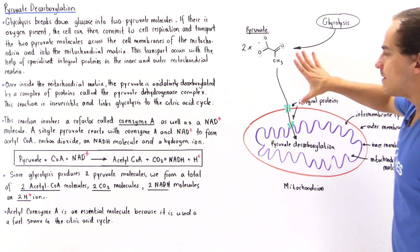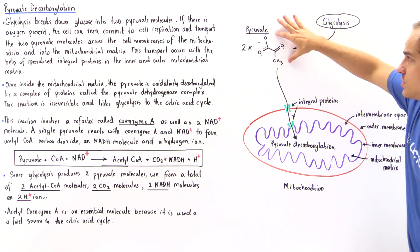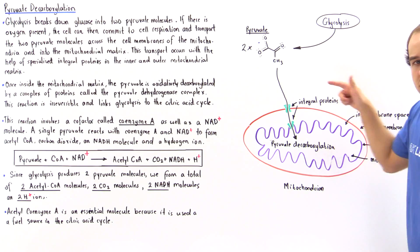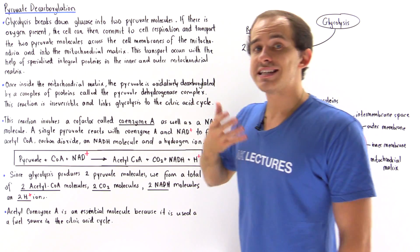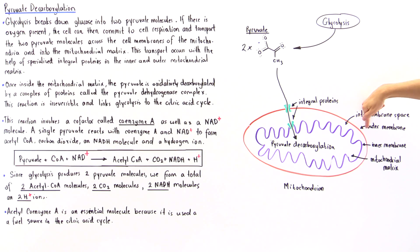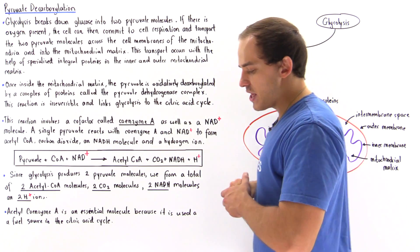If our cell commits to cellular respiration in the presence of oxygen, these two pyruvates are transported via specialized proteins known as integral proteins. We have integral proteins on the outer membrane and on the inner membrane shown in green, and these pyruvates are transported via these membranes into the mitochondrial matrix.